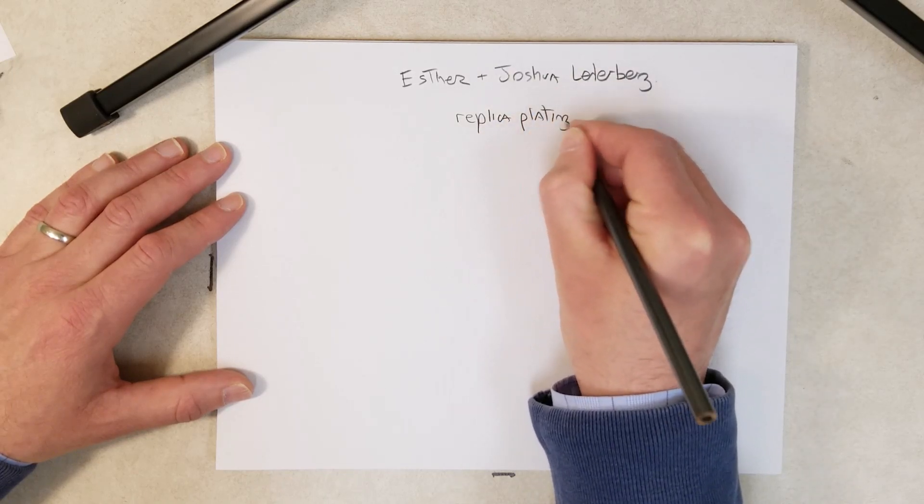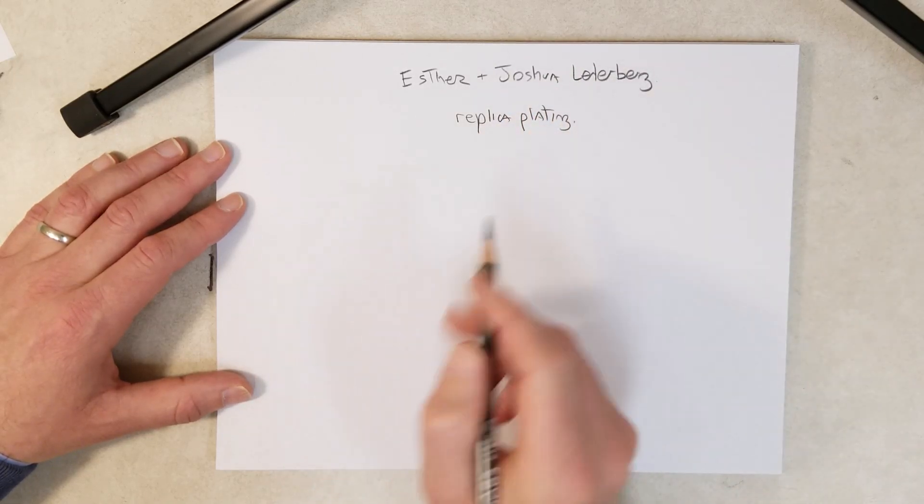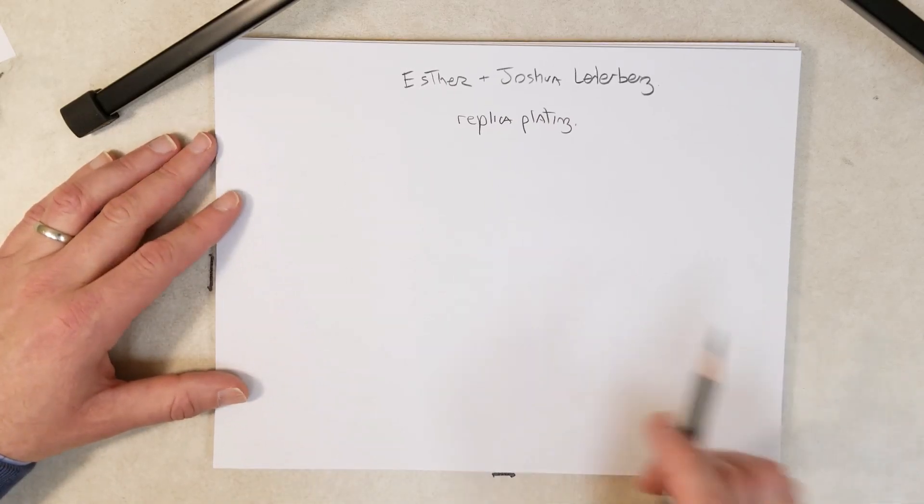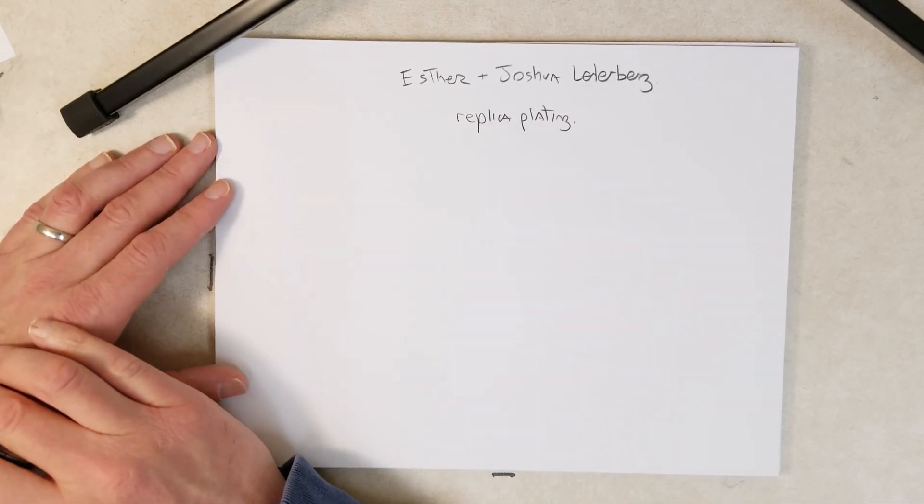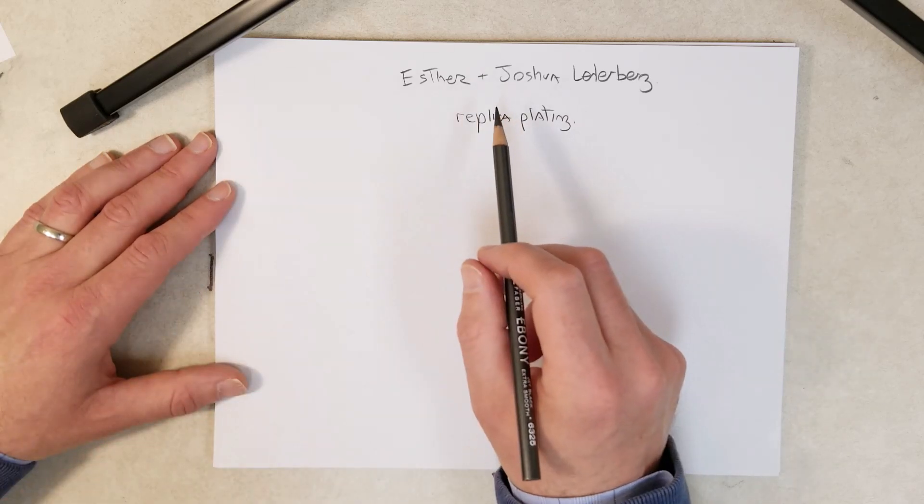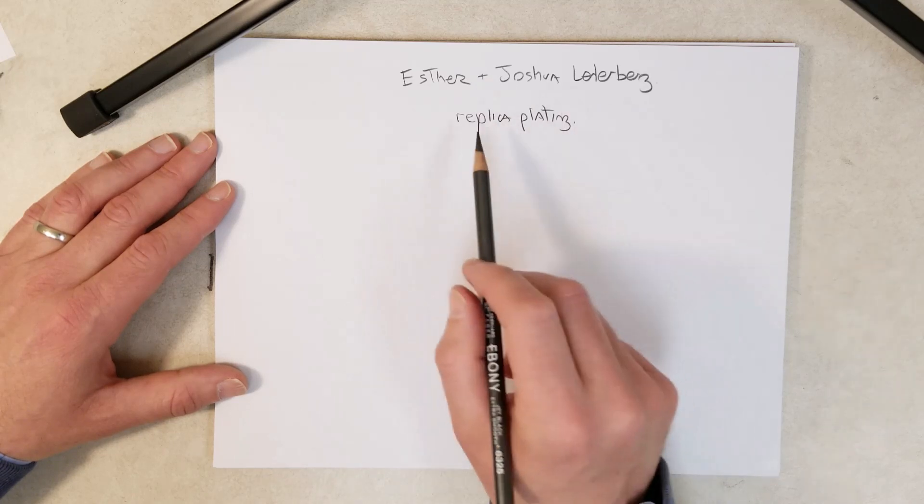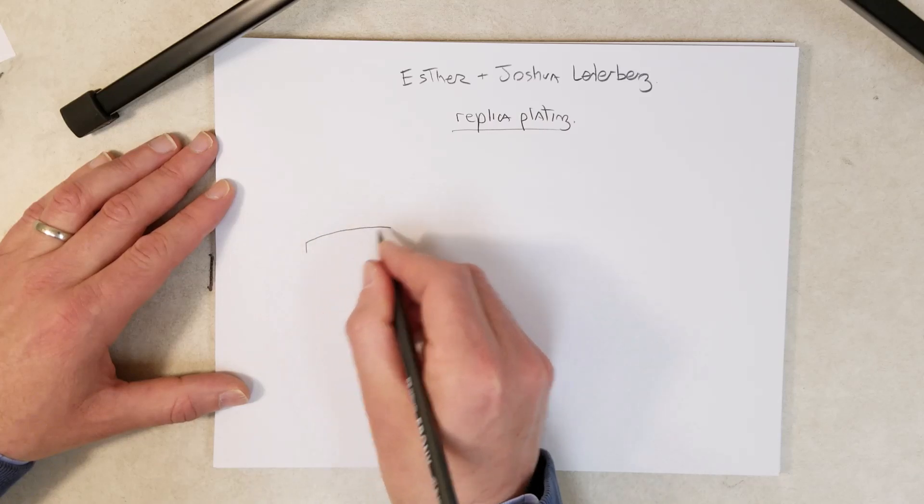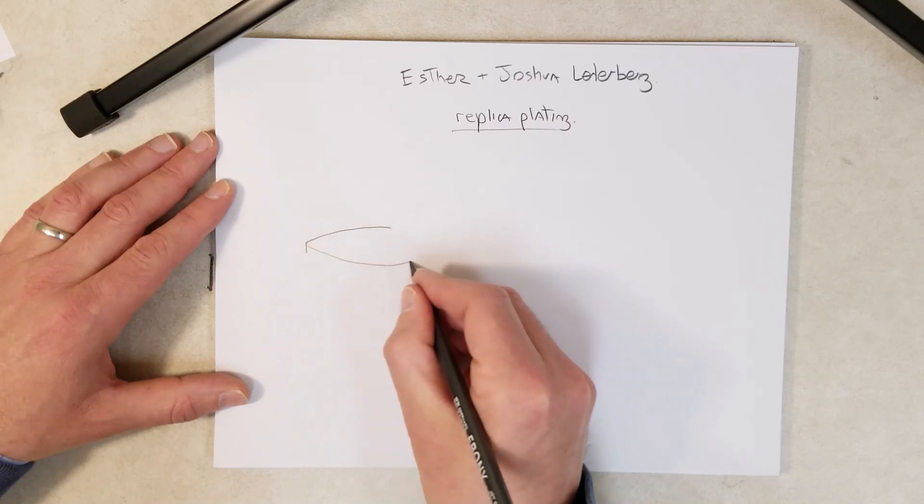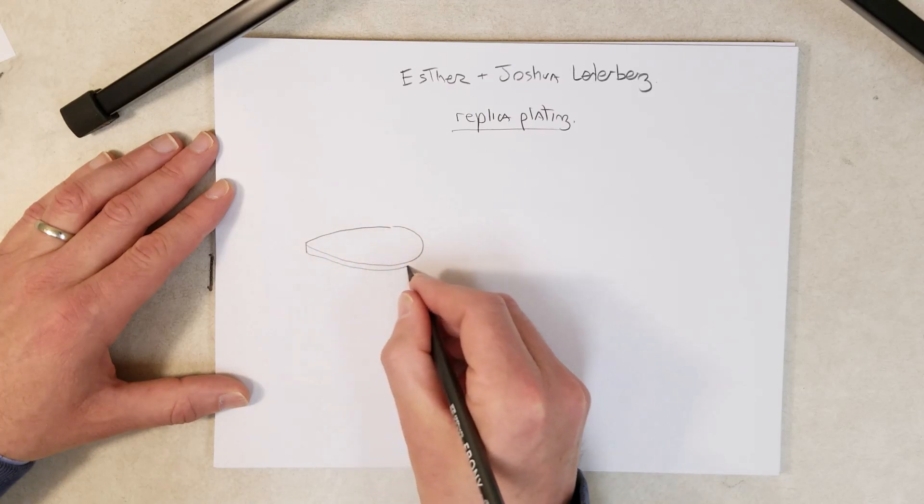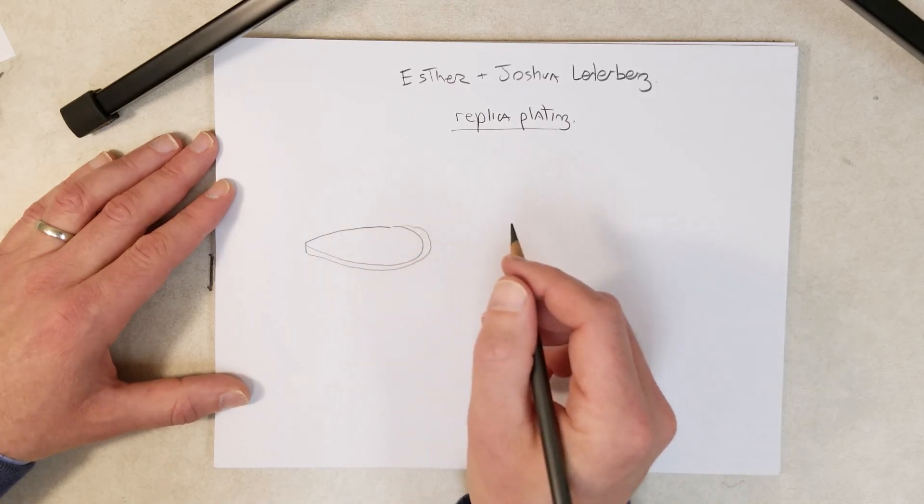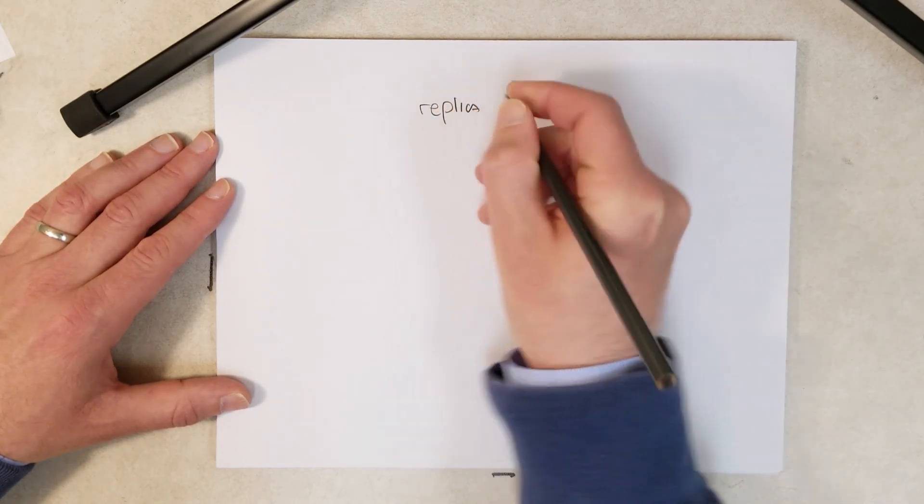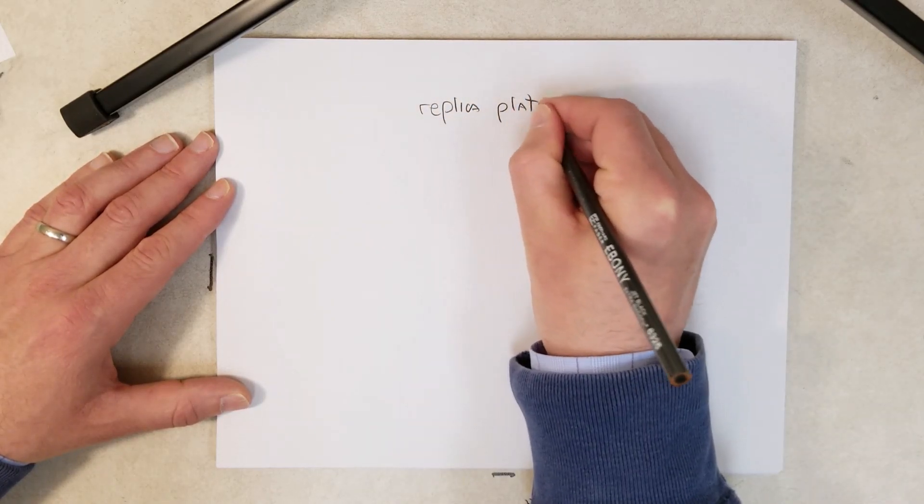What they came up with was this neat technique called replica plating. I'm pretty sure they came up with it too. One reason we like to cover this in genetics is because it's an important technique in genetics, and its first important use is an important thing to cover in a course like this. So what is replica plating? Essentially, you use it with microorganisms that grow on petri dishes in the laboratory.